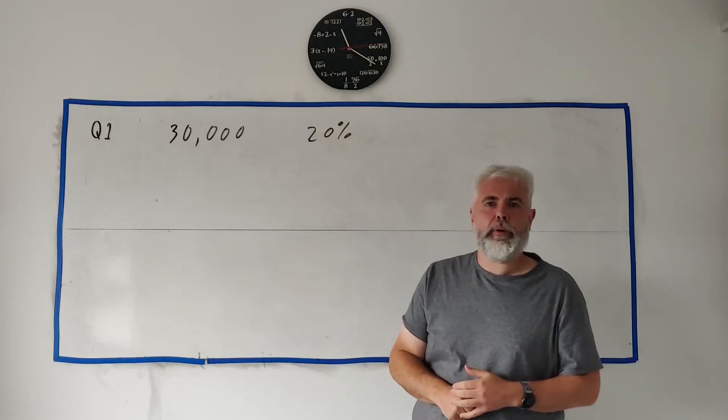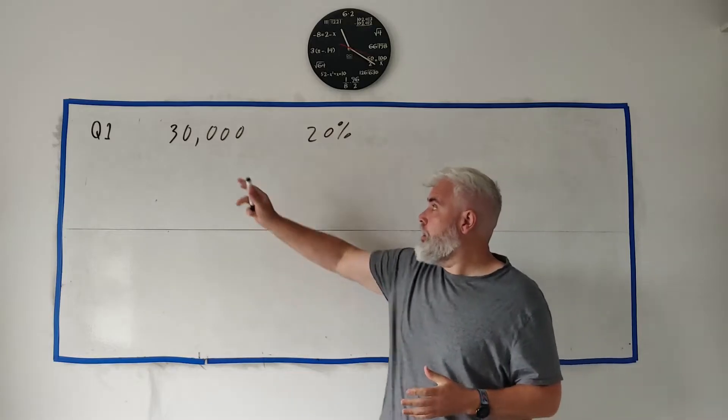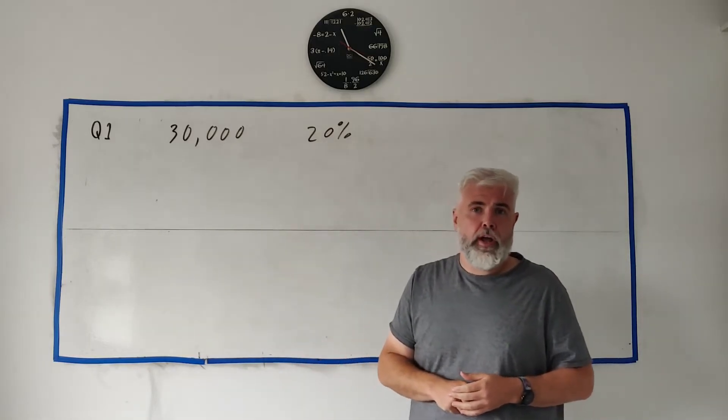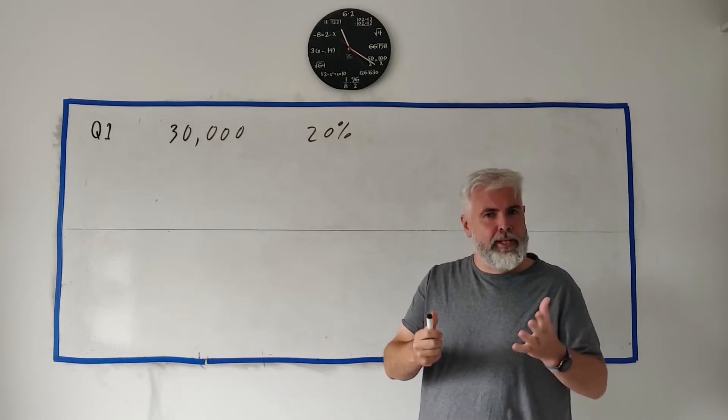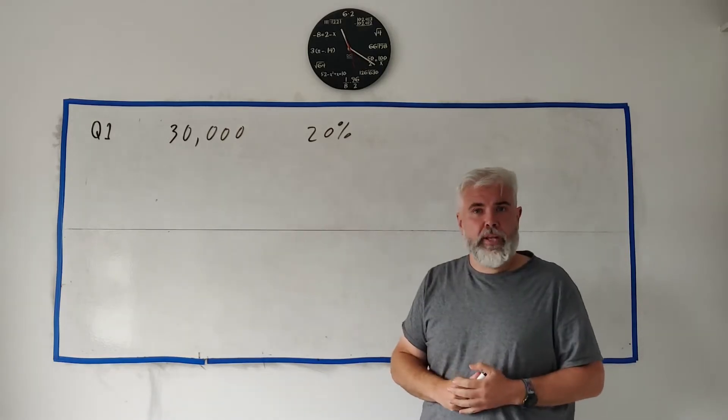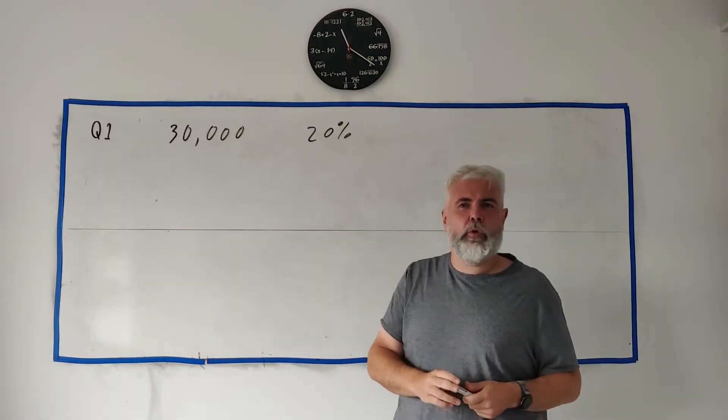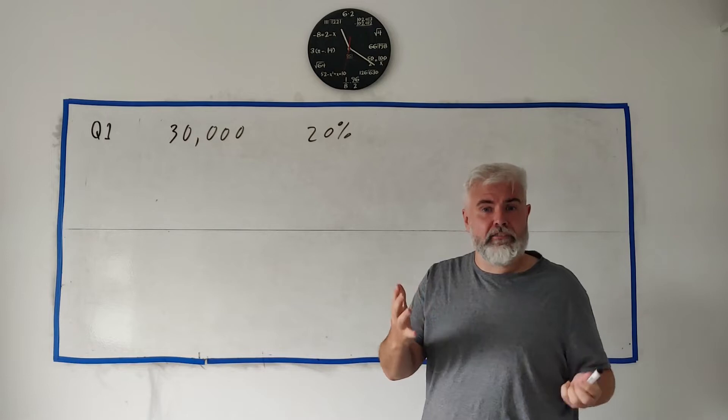In question 1 part A they tell us that a farmer buys a new piece of machinery for 30,000 euro and it depreciates that means decreases in value by 20% every year. So they want to find out what's the value of the machine after one year and then in part 2 the value of the machine after two years.